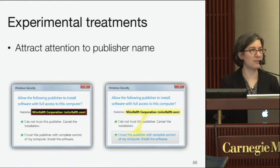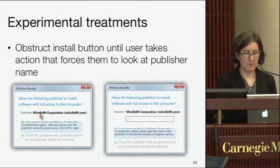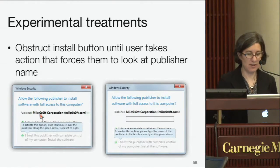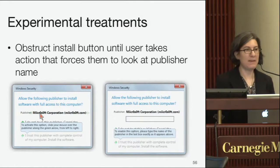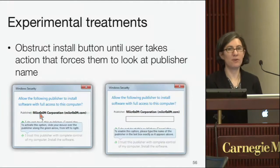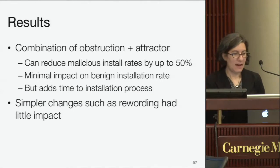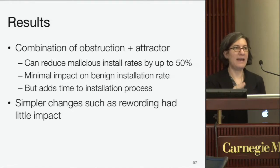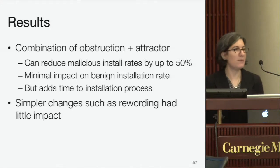We tried conditions that highlighted the name of the publisher so people might actually spot the misspelling. We also tried conditions where users had to actively do something before being allowed to install. In one condition, they had to move their mouse pointer over the word 'Microsoft Corporation.' In another, they had to actually type in the misspelled 'Microsoft Corporation' before they were allowed to install the software.